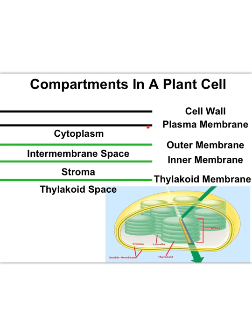The outside of a plant cell is the cell wall, and inside that is the plasma membrane, with the cytoplasm inside. Here's the boundary of the chloroplast: the outer chloroplast membrane, with the inner chloroplast membrane inside and the intermembrane space in between. The space inside the inner membrane — the stroma — is all the clear part in here. Then we've got the thylakoids with their own thylakoid membrane and the thylakoid space inside.